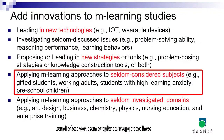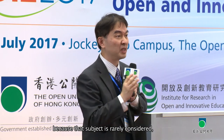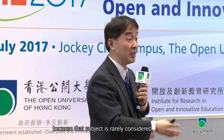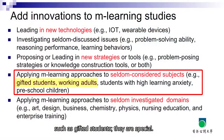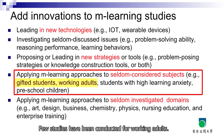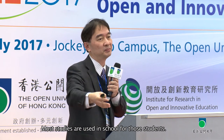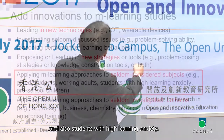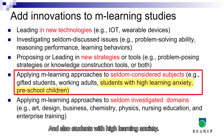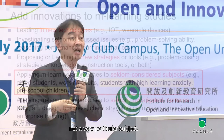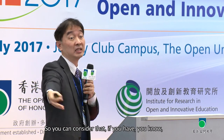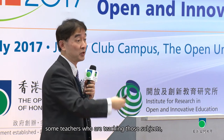When a tool is used in a quite different learning context, it becomes a new strategy. The fourth strategy is to apply our approach to seldom-considered subjects. Sometimes a study is innovative because the subject is rarely considered — such as gifted students, working adults, students with high learning anxiety, or preschool children. Few studies have been conducted for working adults; most studies are used in school settings.